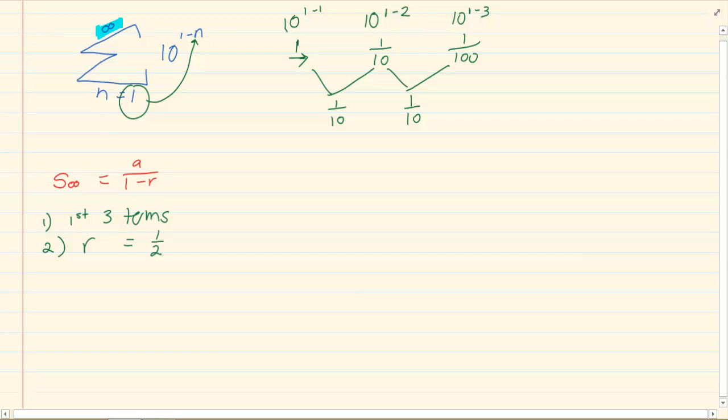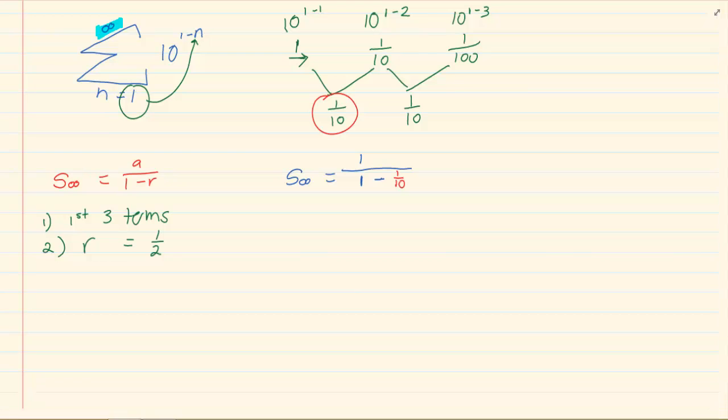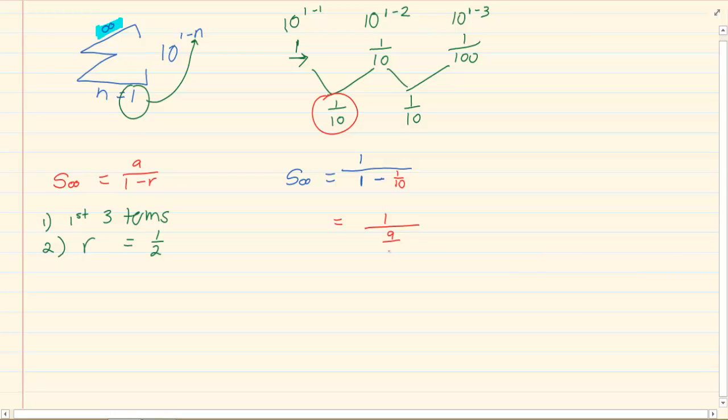Then you can go and substitute into the formula because you only need those two things. You have s of infinity equals your a, which is 1, all over 1 minus my r, which is 1 over 10. So we have 1 all over 9 over 10, which equals 10 over 9. So the sum of infinity is equal to 10 over 9.